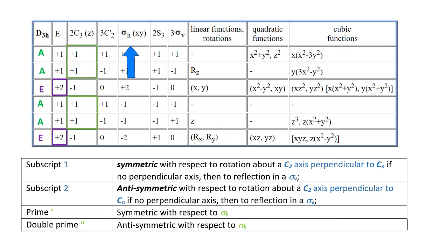Then we might look under sigma horizontal. The first three entries are plus 1, that means we have symbol prime. And the last three entries are anti-symmetric under sigma H, so that gives symbol double prime.